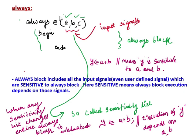The always block includes all the input signals. Here, A, B, C — these are all input signals. The always block may also include user-defined signals. These signals are sensitive to the always block. All the input signals included inside the parenthesis are sensitive to the always block, meaning this always block's execution depends on these signals — a signal is sensitive to the always block if the execution of the always block depends on those signals.